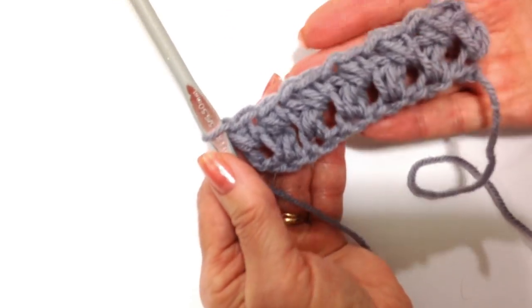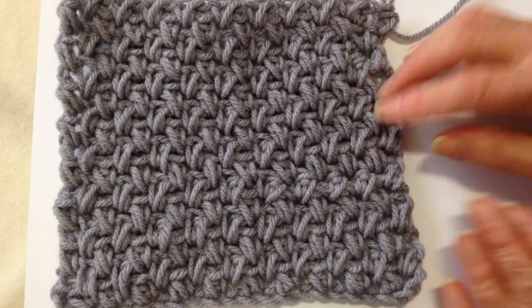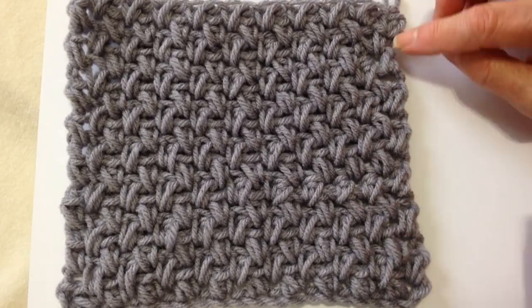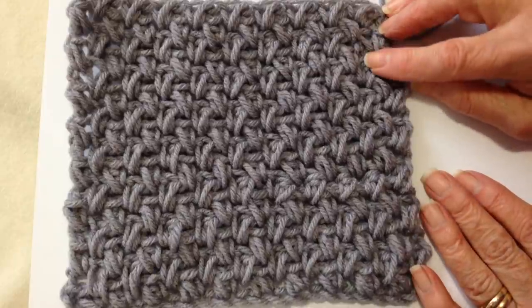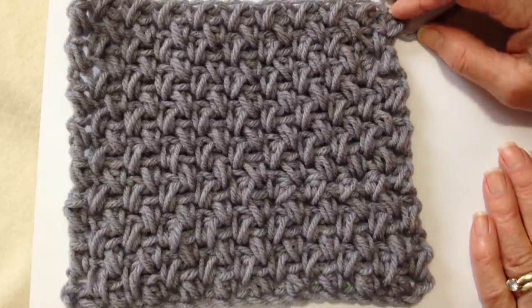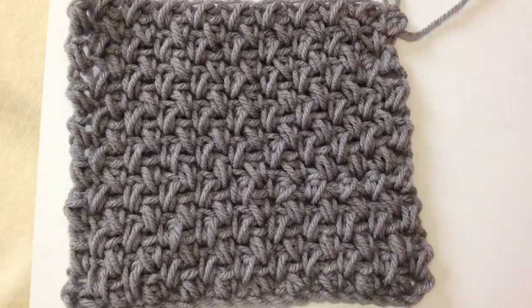And that's how it looks with two rows. And there's the Elizabeth stitch with additional rows. So there you have a very versatile stitch that you can use for making lots of different garments and articles. Thanks for watching. Bye for now.